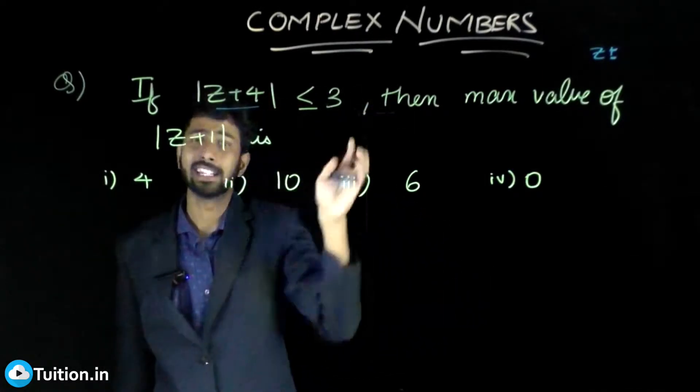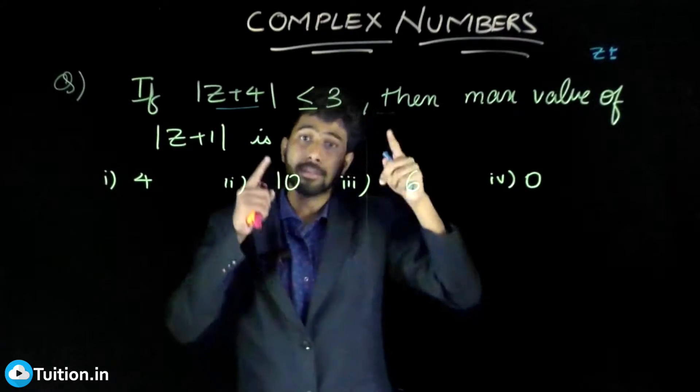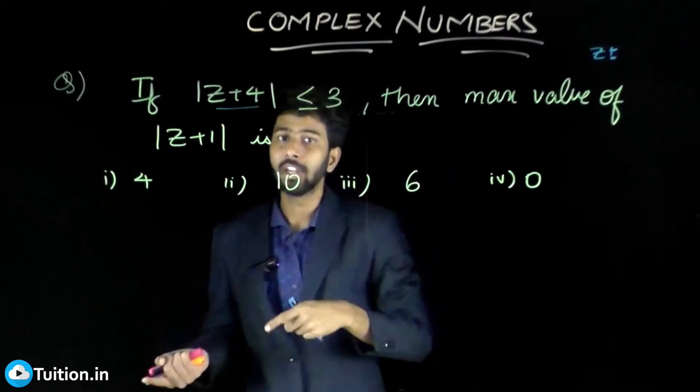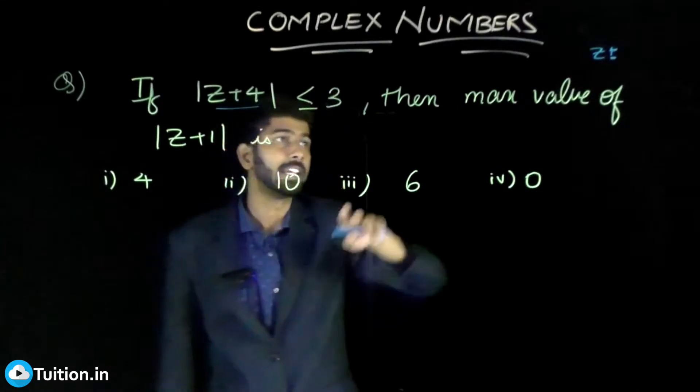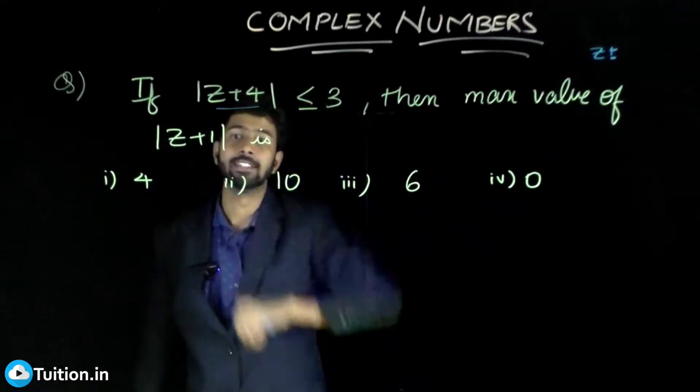So z plus 4 is actually another complex number. The mod of that would mean its distance from the origin. If its distance from the origin is less than 3, then the maximum value of this is...